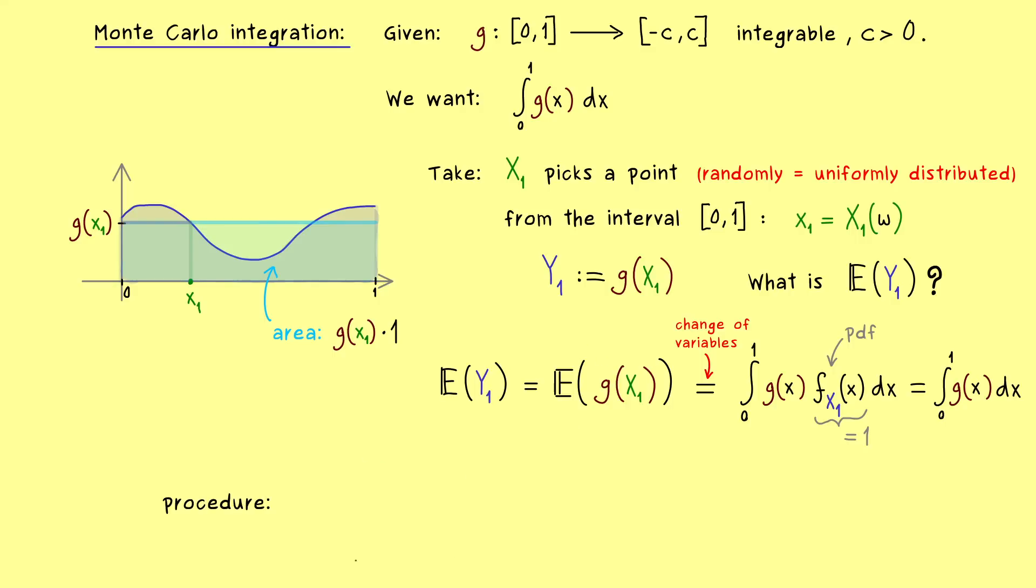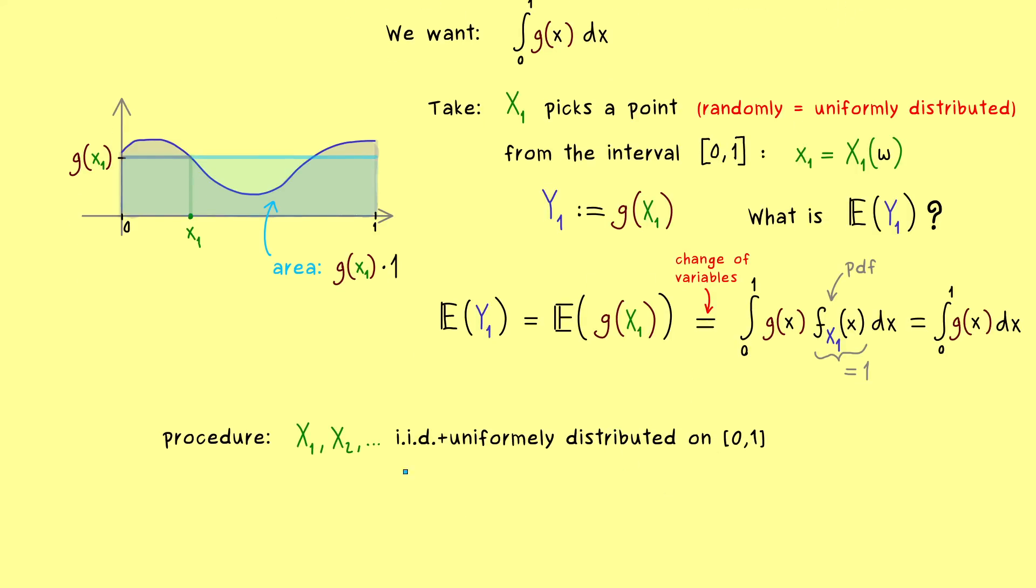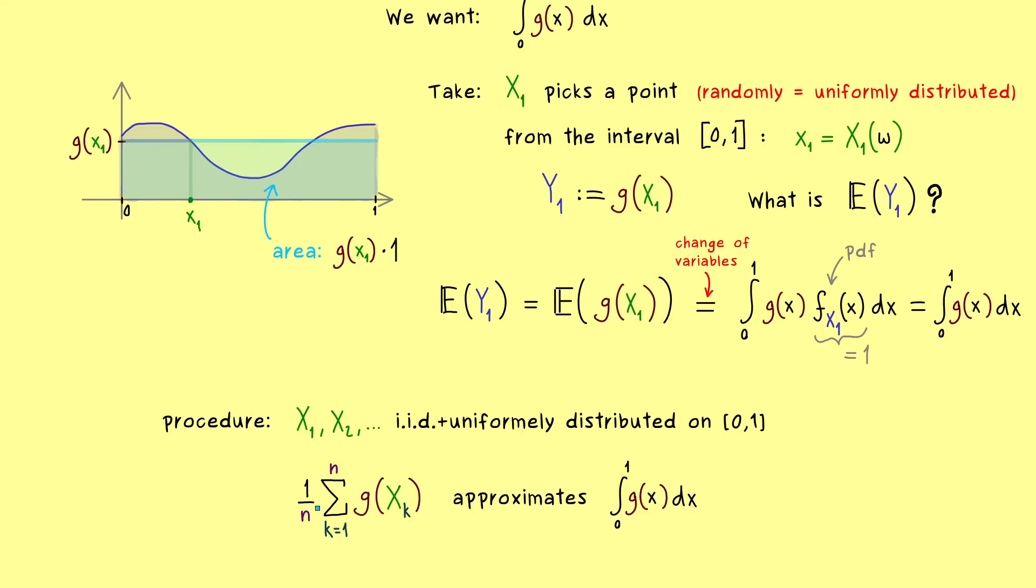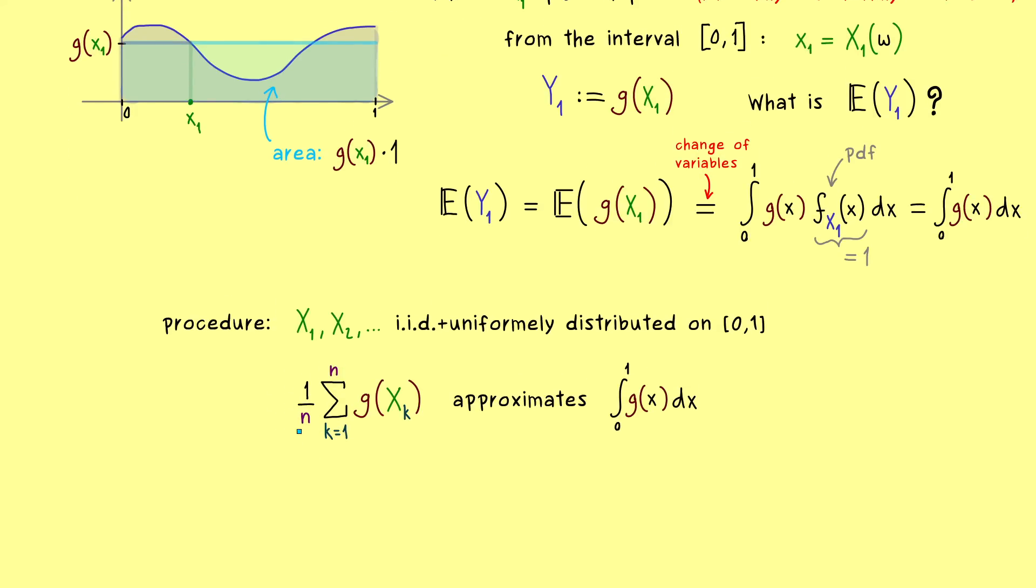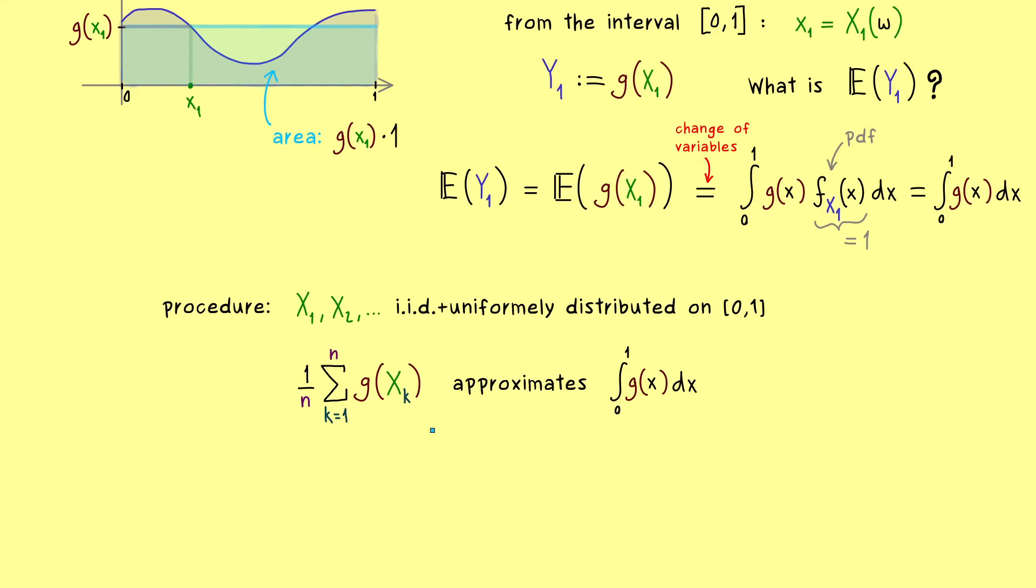In other words the procedure here is quite easy. We just take uniformly distributed random variables X, and then we just apply the function g to them. And then the average we can form here will approximate the integral. And one way to see that in the picture would be to pull in this factor 1 over n into the sum.